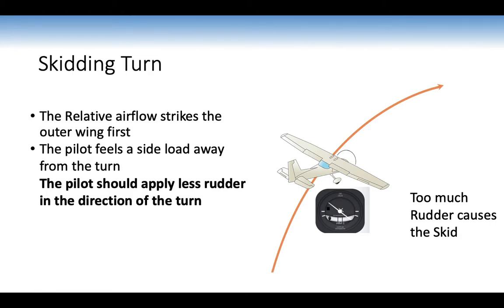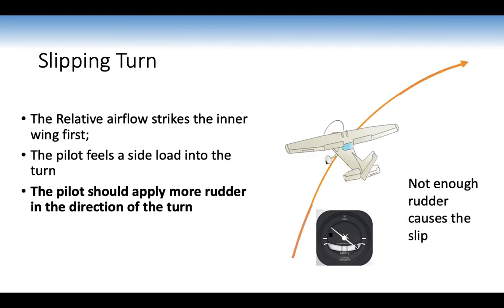Skidding turn: the relative airflow strikes the outer wing first. During a skid, the balance ball sits towards the outside of the turn and the higher wing. The pilot feels a side load away from the turn — like being in a car turning too quickly. To fix it, apply less rudder in the direction of turn. Slipping turn is the opposite: relative airflow strikes the inner wing, the balance ball sits towards the lower wing, the pilot feels side load into the turn, and should apply more rudder in the direction of turn.